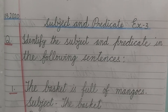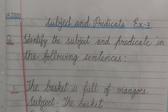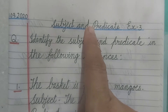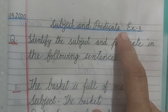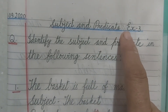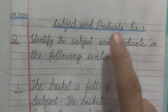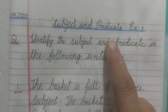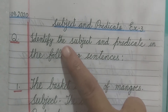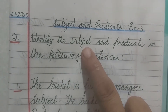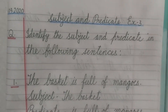Good morning children. We have done subject and predicate, remember, and we have done exercise number 1 and 2. Today we are going to do exercise number 3. The same procedure is to be done in this exercise also. You have to identify the subject and predicate in the sentence.